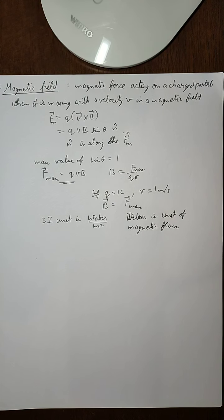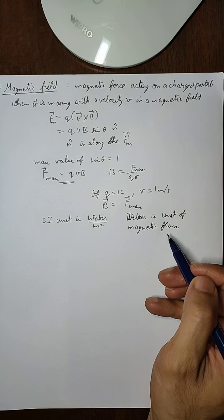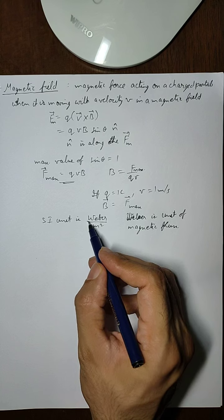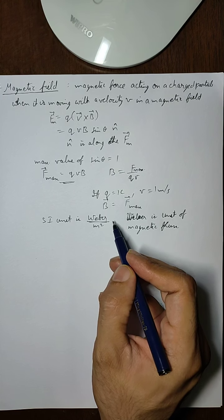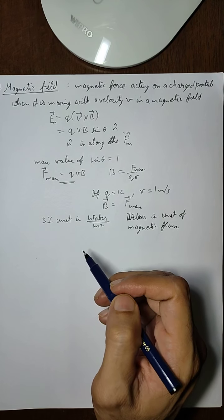Magnetic flux is same as the electric flux that we studied in the chapter of electrostatics. It is the number of magnetic field lines passing through a particular area. So its unit is Weber, and when Weber is divided by meter square, then it is the unit of magnetic field strength.